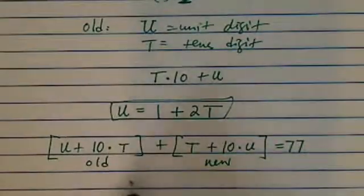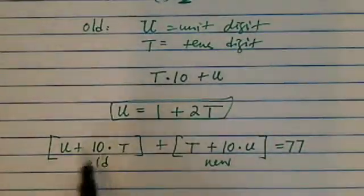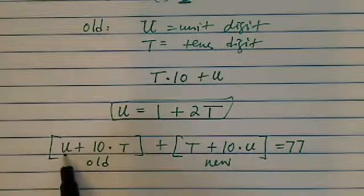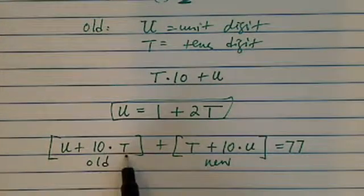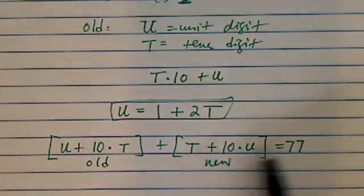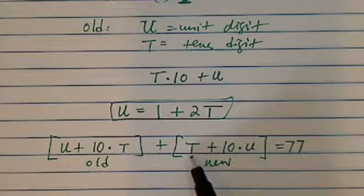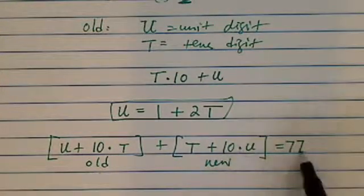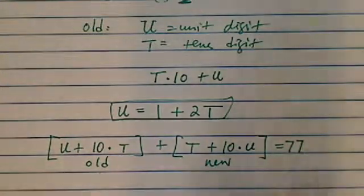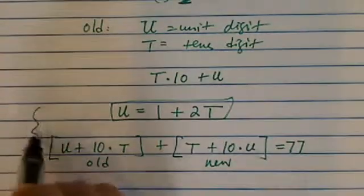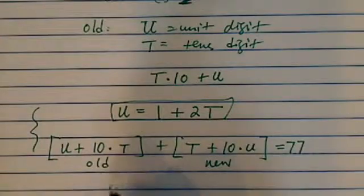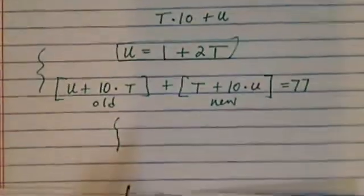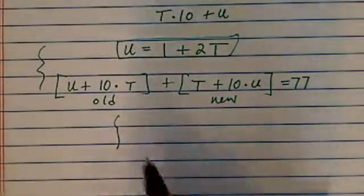Once again, the old number is U plus 10 times T. When it's reversed, it goes the other way around: T plus 10 times U equals 77. Two equations, two unknowns — let's just solve it. It should be pretty easy from there.